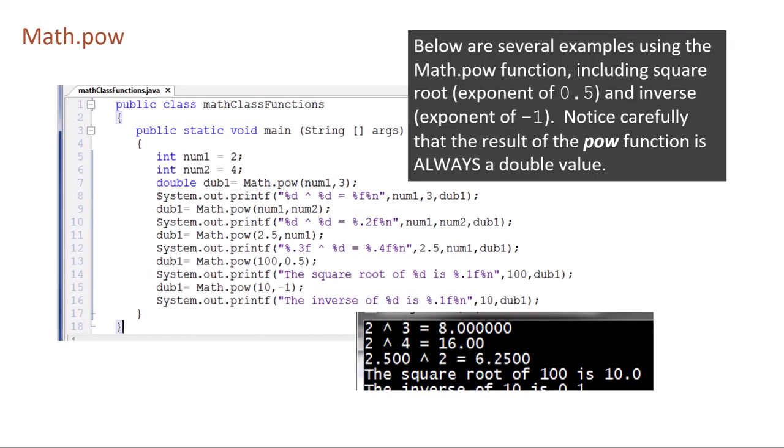Below are several examples using the Math.pow function, including square root (exponent of 0.5) and inverse (exponent of negative 1). Notice carefully that the result of the pow function is always a double value. First output: num1 to the power of num2, and we get 8.0. Second output: 2 to the power of 4, output 16. Third output: 2.5 squared, 6.25.